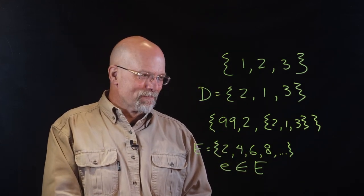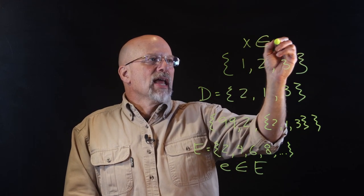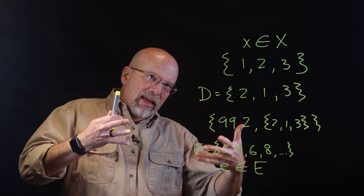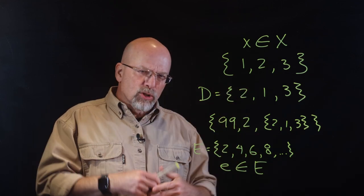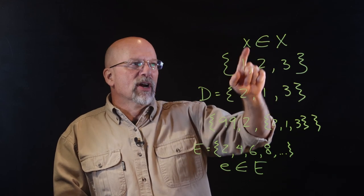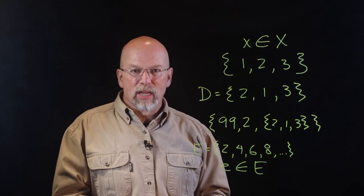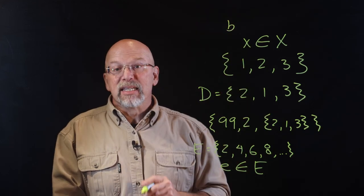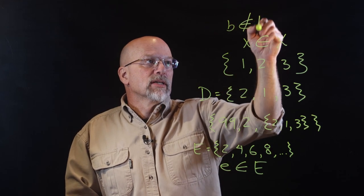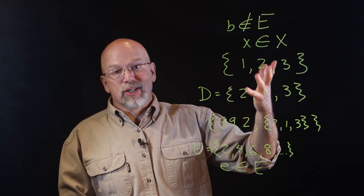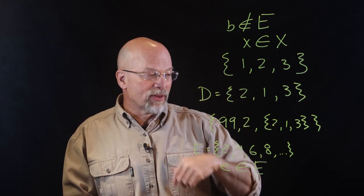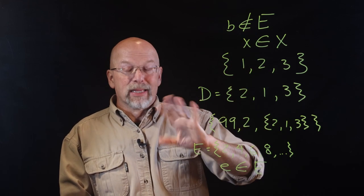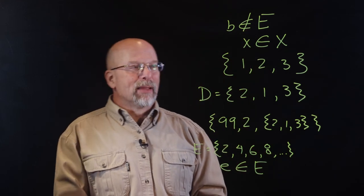We can simply say x is an element of capital X. This symbol identifies that lowercase x is an element of uppercase X. It's also possible — for example, if B is an odd number — then B is not an element of capital E. So we've got four symbols: curly brackets identifying a set, the ellipsis meaning 'continue the series,' the 'is an element of' symbol, and the 'is not an element of' symbol.